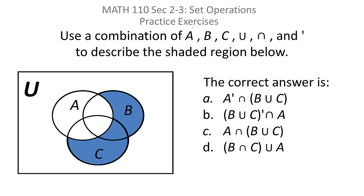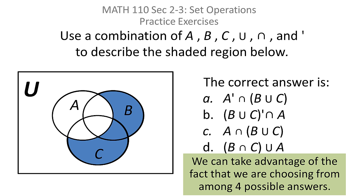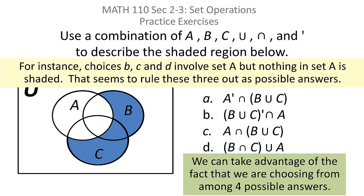Use a combination of A, B, C, union, intersection, and complement to describe the shaded region below. It's multiple choice, so we simply have to decide which one of those four is correct. We can take advantage of the multiple choice format — look at the answers individually and try to eliminate some, and what's not eliminated will be the final answer. That's the strategy here.